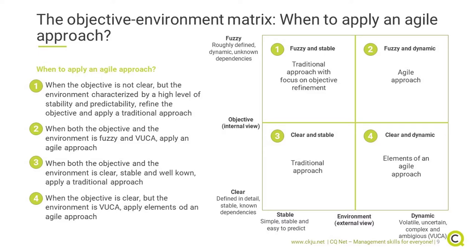Category 1 is a fuzzy objective in a stable environment — in this situation it is best to apply a traditional approach and focus on objective refinement. Category 2 is a fuzzy objective in a dynamic environment — this is the perfect situation where you should apply an Agile approach. Category 3 is a clear and detailed objective in a stable environment — here it is best to apply a traditional approach: make a plan, implement it, and complete the project. Category 4 is a clear and detailed objective but in a dynamic environment — in this case it is best to pick some of the Agile principles and implement them as needed.